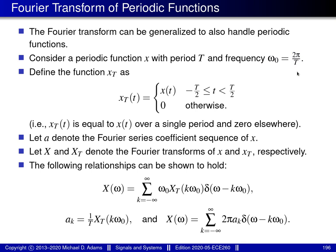Before presenting the main result, I need to introduce some additional definitions. Little x subscript capital T denotes a function equal to our original periodic function little x over a single period, from minus capital T over 2 to plus capital T over 2, and zero otherwise. Little a denotes the Fourier series coefficient sequence for little x. Big X denotes the Fourier transform of little x, and big X subscript capital T denotes the Fourier transform of little x subscript capital T.